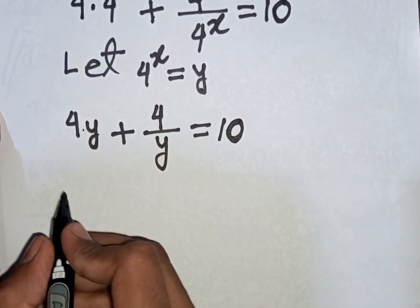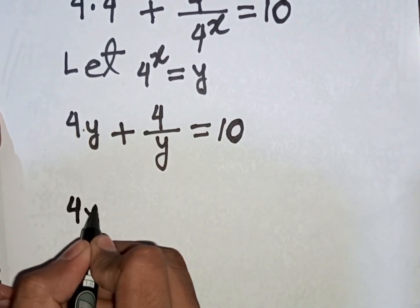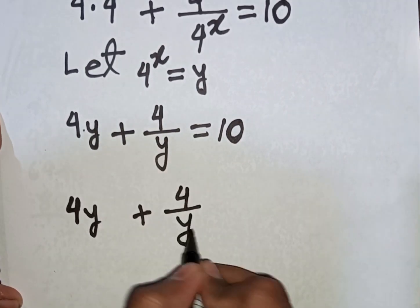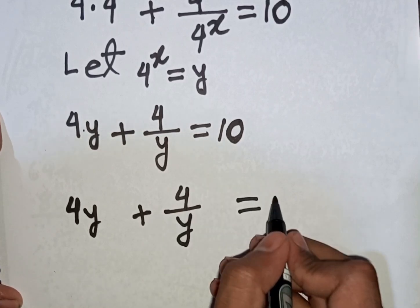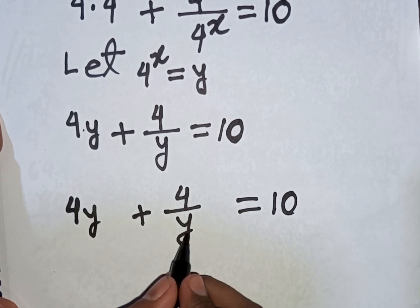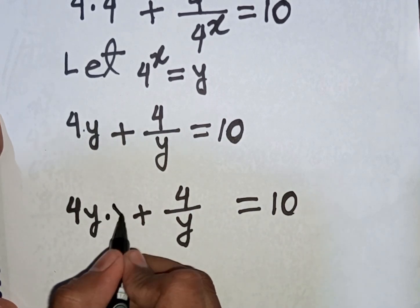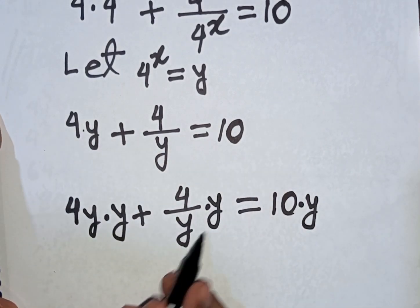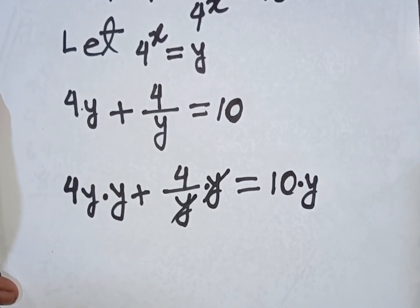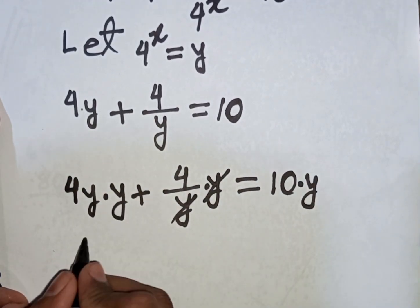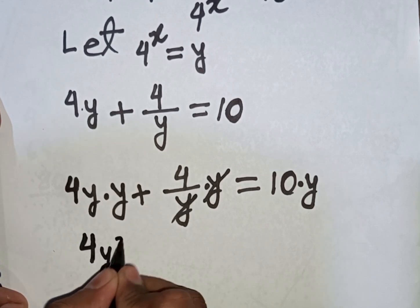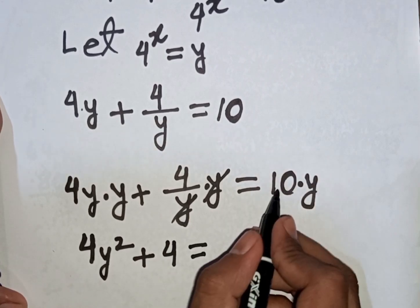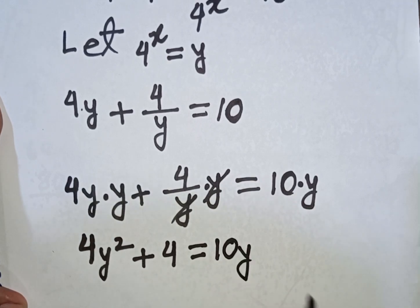We have 4y plus 4 over y equals 10. Now we multiply both sides by y. The y in the denominator cancels, giving us 4y times y plus 4 equals 10 times y. That means 4y squared plus 4 equals 10y.